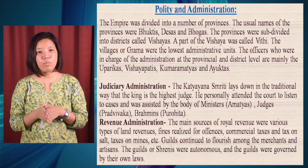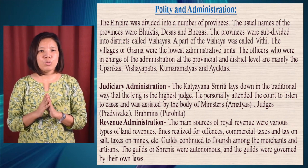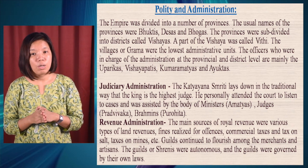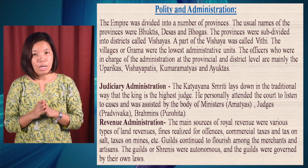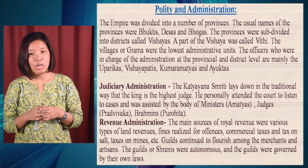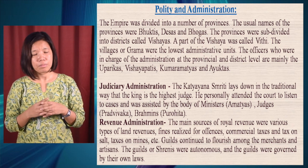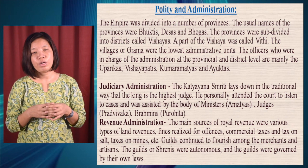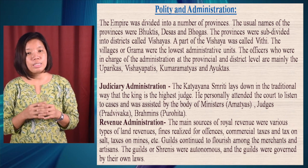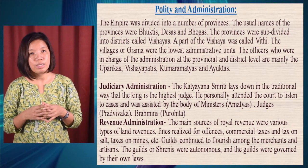The officers in charge at provincial and district level were mainly Uparikas, Vishayapatis, Kumara Mathias, and Ayuktas. In the judicial administration, the Kathayana Smriti lays down that the king was the highest judge, personally attending courts to listen to cases, assisted by ministers, judges or Pradvivaka, and Brahmins or Purohitas. The main sources of royal revenue were land revenues, fines for offenses, commercial taxes, and taxes on salt and mines. There were also guilds or shrines which flourished among merchants and artisans, and these guilds were autonomous, governed by their own laws.